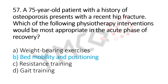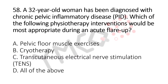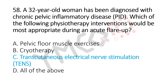Now let's move to question number 58. A 32-year-old woman has been diagnosed with chronic pelvic inflammatory disease. Which of the following physiotherapy interventions would be the most appropriate during an acute flare-up? Option A, pelvic floor muscle exercises. Option B, cryotherapy. Option C, transcutaneous electrical nerve stimulation, TENS. Option D, all of the above. And the answer is Option C, transcutaneous electrical nerve stimulation, TENS.